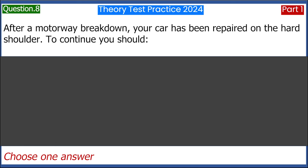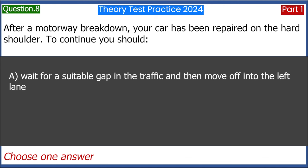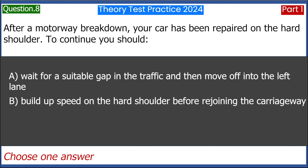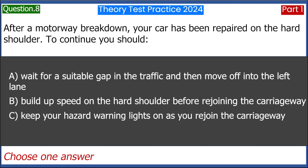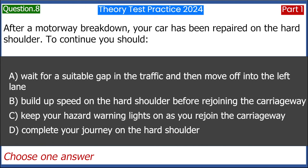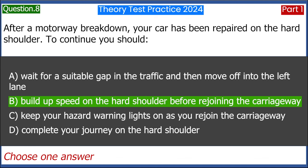After a motorway breakdown, your car has been repaired on the hard shoulder. To continue you should: A. Wait for a suitable gap in the traffic and then move off into the left lane. B. Build up speed on the hard shoulder before rejoining the carriageway. C. Keep your hazard warning lights on as you rejoin the carriageway. D. Complete your journey on the hard shoulder. Answer: B. Build up speed on the hard shoulder before rejoining the carriageway.